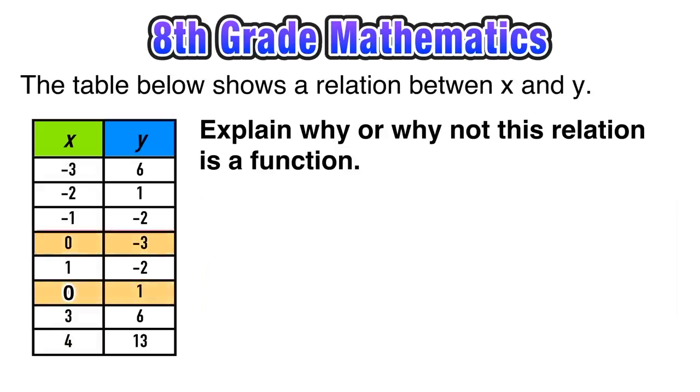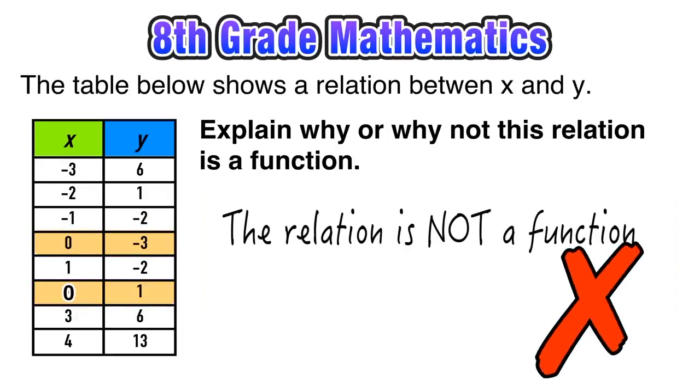It has one at negative 3 and another one at positive 1. So if this were the case, our explanation would be that the relation is not a function.